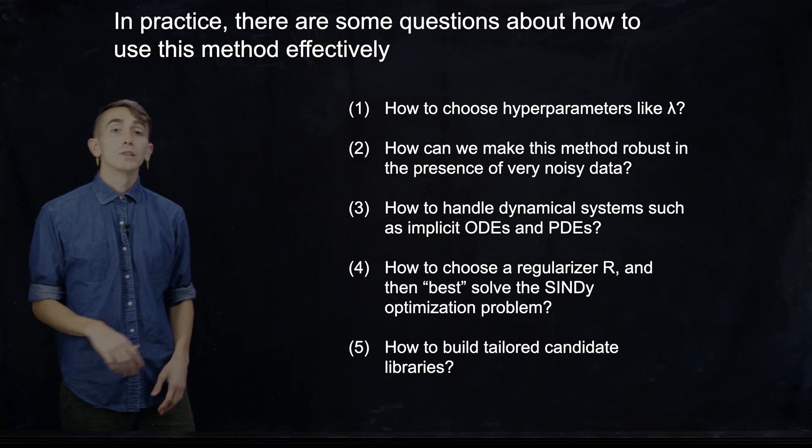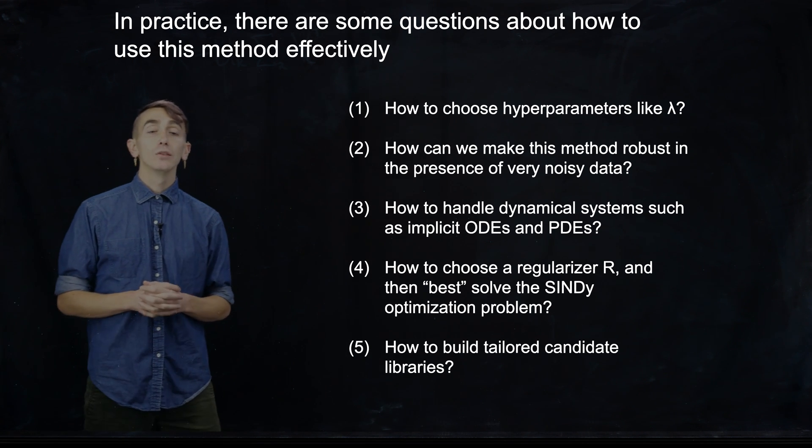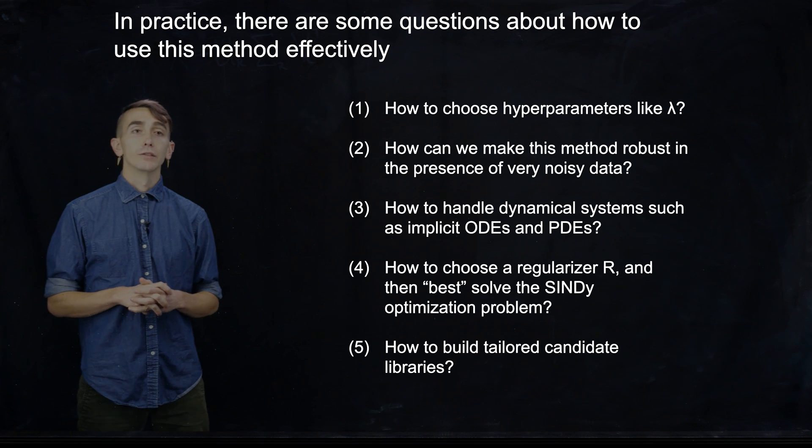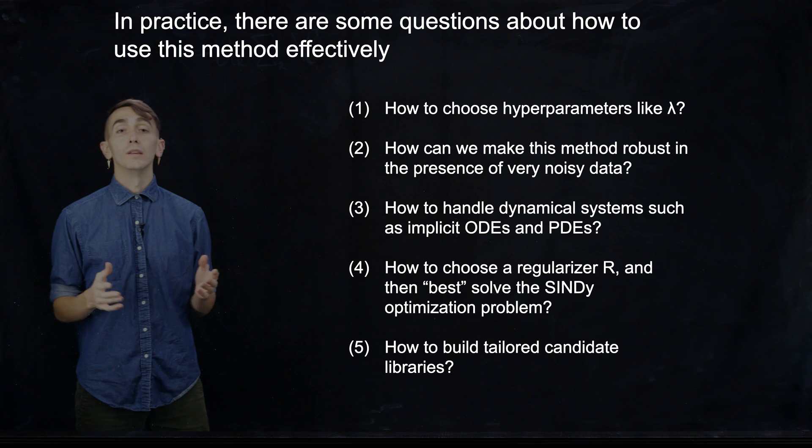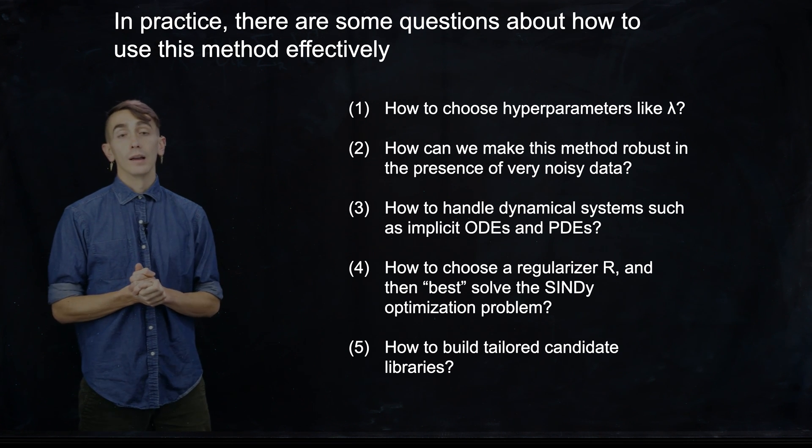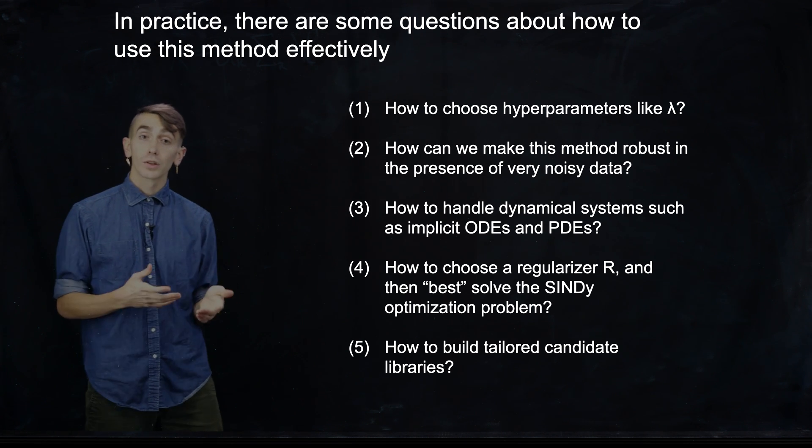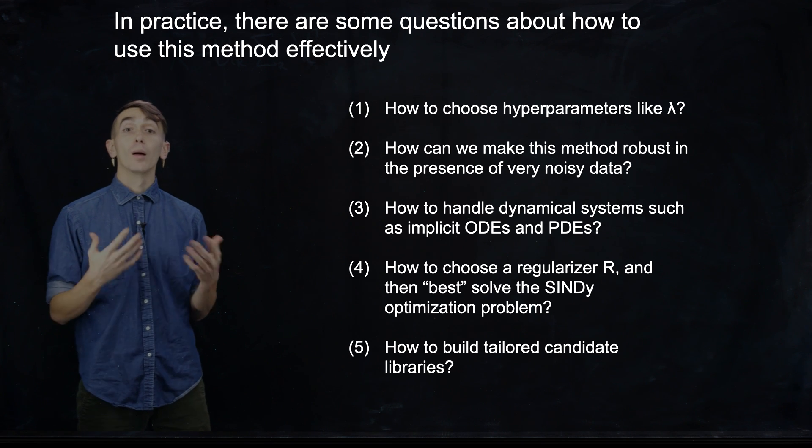And then lastly, I'm going to talk about how you can build tailored candidate libraries. So one thing you may have noticed on the previous slide is that you can put any function you want into your candidate library. And so if you start adding a lot of functions, this library can get combinatorially large.